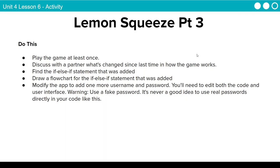We're going to look at the third version of Lemon Squeeze. Go ahead and play it through again and see what it does, then talk with your partner about what has changed. There's an additional if-else-if statement that was added in. Find it, talk about it, and then modify the app so that there's a different username and password that you can use. You'll need to change both the code and the user interface. Go ahead and pause the video and take care of those two things.